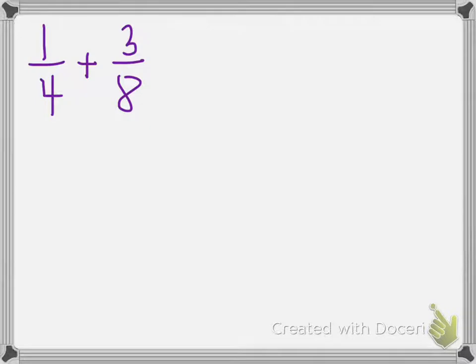So let's go ahead and do that now. I'm going to multiply the four and the eight together, and that's going to give me our common denominator, which is 32.